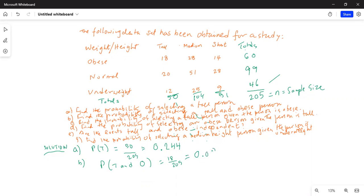And that is out of 205, and that is equal to 18 divided by 205 is equal to 0.088.